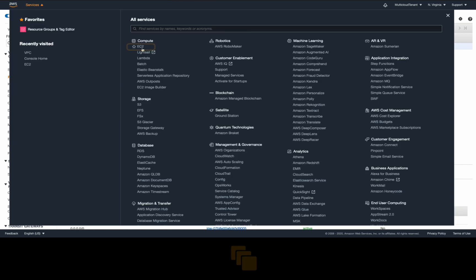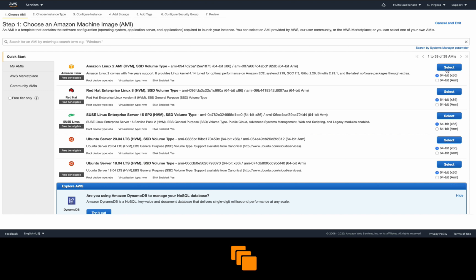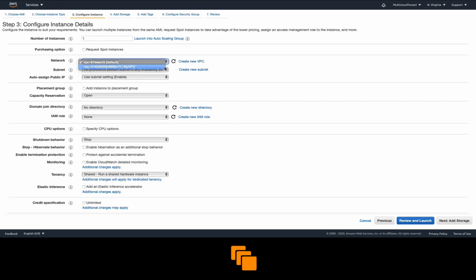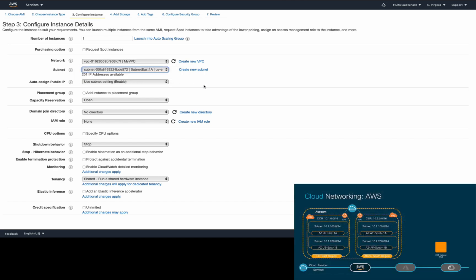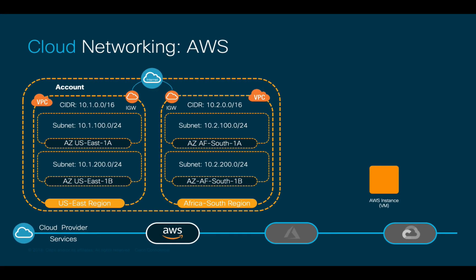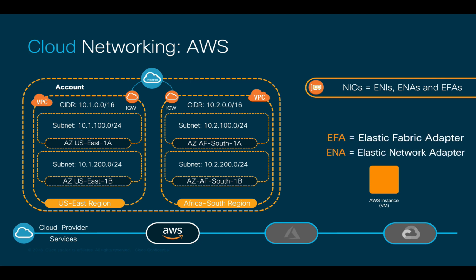If you go to EC2 to create an instance, you have to choose the cloud network settings, assigning the right subnet and availability zone to the cloud VM NIC. In the case of AWS, such NICs are known as elastic network interfaces or ENIs. There are other types of NICs you can also use, such as ENAs and EFAs, which may provide accelerated connectivity and low latency features for specific needs.